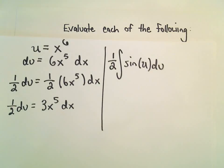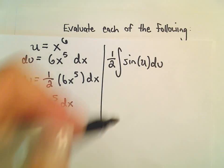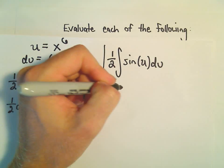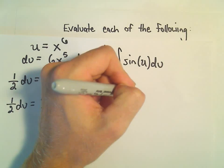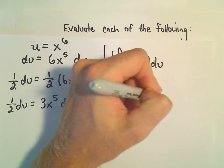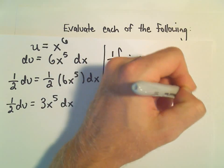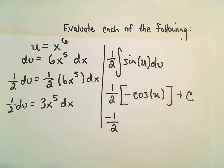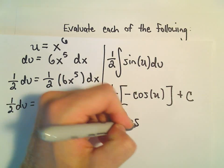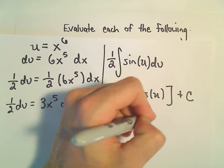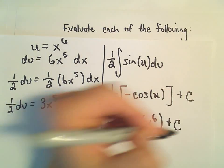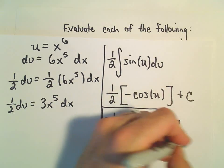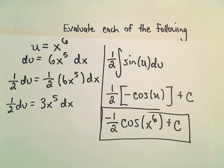So now we're really just integrating 1 half sine of u. And well, if you integrate that, the antiderivative of sine is negative cosine. We'll include our plus c. And I'm just going to pull the negative 1 half out. And then we have cosine of u, which is just x to the 6th, plus c. And that would be our antiderivative for the first example.